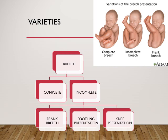Next is incomplete breech, where there is varying degree of extension of the fetus either at the knee joint or at the hip joint. There are three sub-varieties. First is frank breech, where the thighs are flexed on the trunk and the legs are extended at the knee joint, so the presenting part consists of the two buttocks and external genitalia. This variety is common in primigravidas. Next is footling presentation, where the thighs and legs are partially extended so that the two feet become the presenting part.